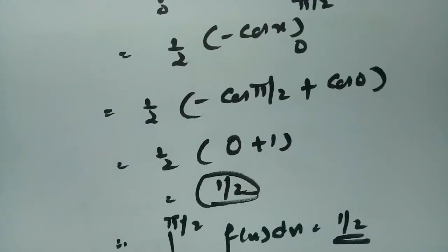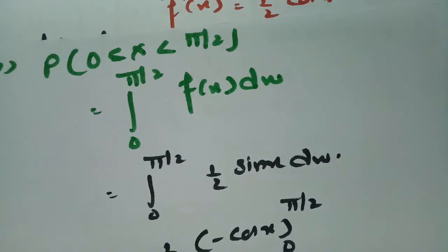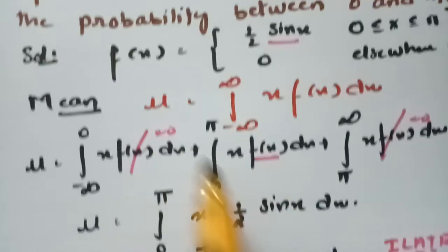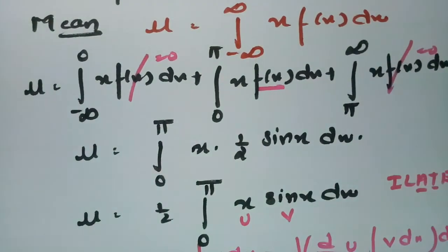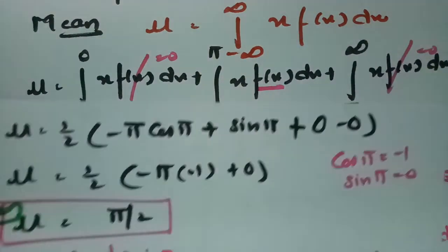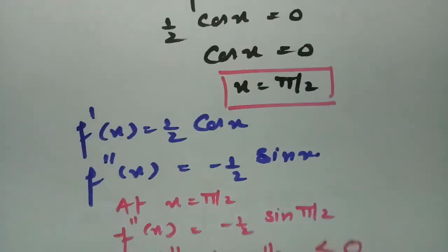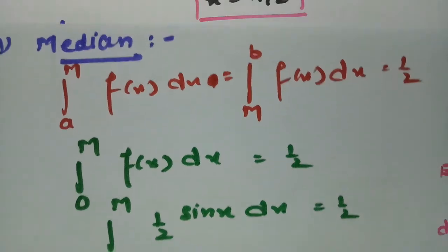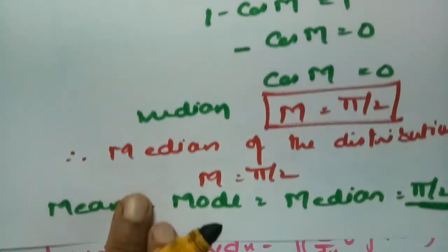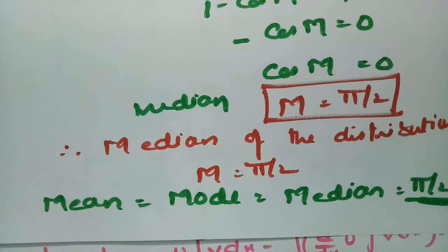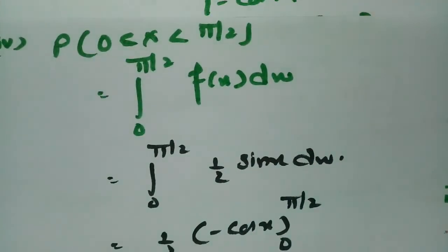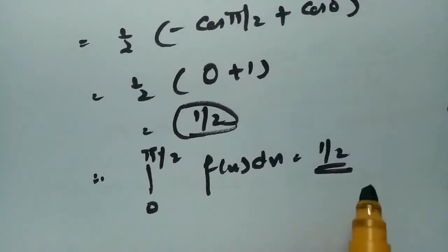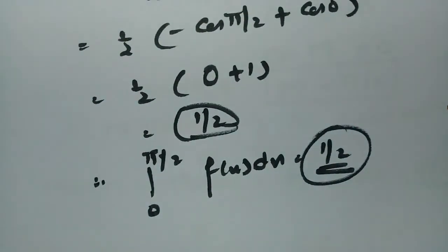This is how we solve this problem. First find the mean, then the mode, then the median — all three values are π/2 — and finally the probability when the variate lies between 0 and π/2, which is 1/2.